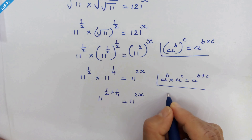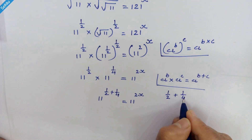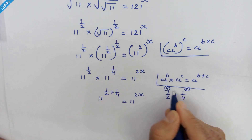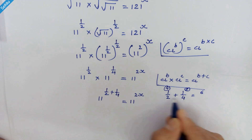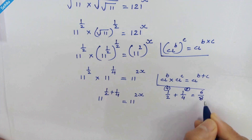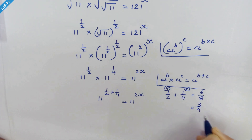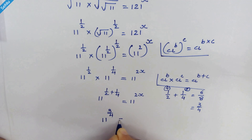Now here we have 1 upon 2 plus 1 upon 4. Four ones are 4 and two ones are 2, we can add these to get 6, and the denominator is 8, so 6 upon 8 simplifies to 3 upon 4. So we will put this value in place of the exponent, giving us 11 raised to 3 upon 4 is equal to 11 raised to 2x.